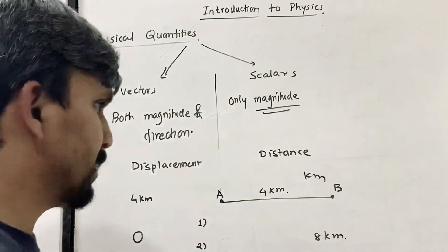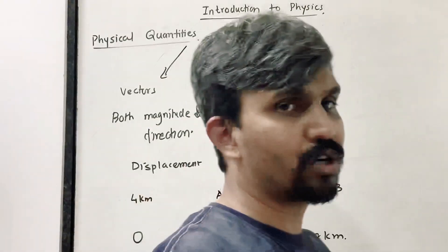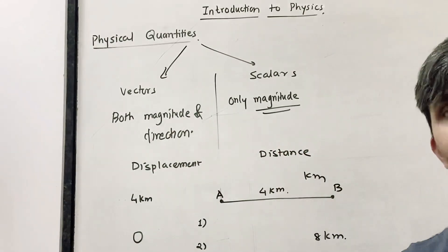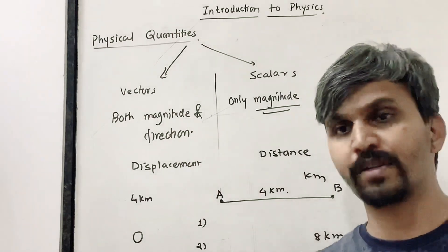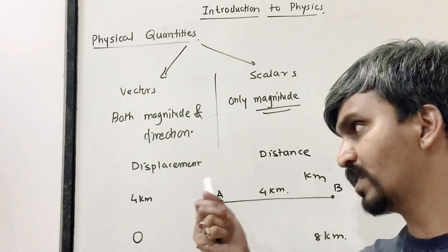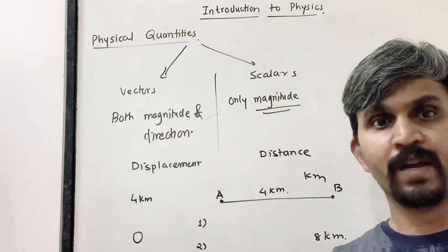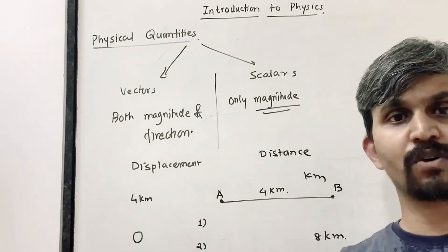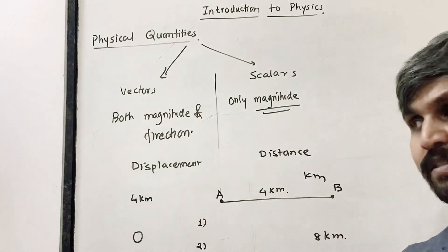Displacement is the shortest distance between the starting point and the end point. The actual path covered is called distance.